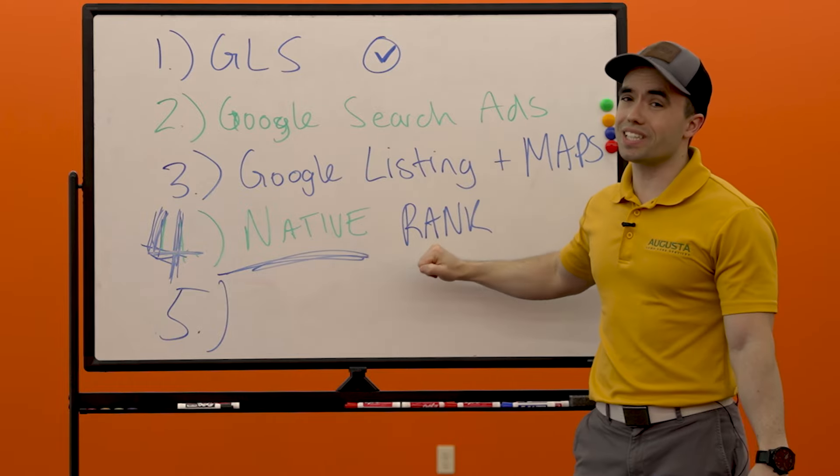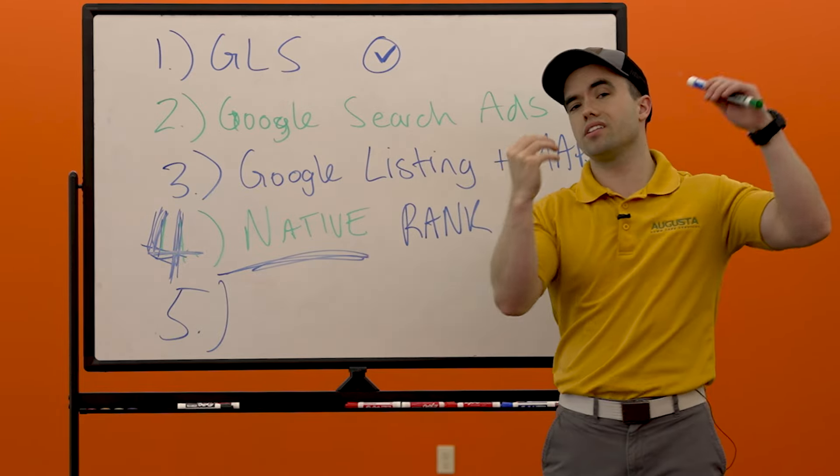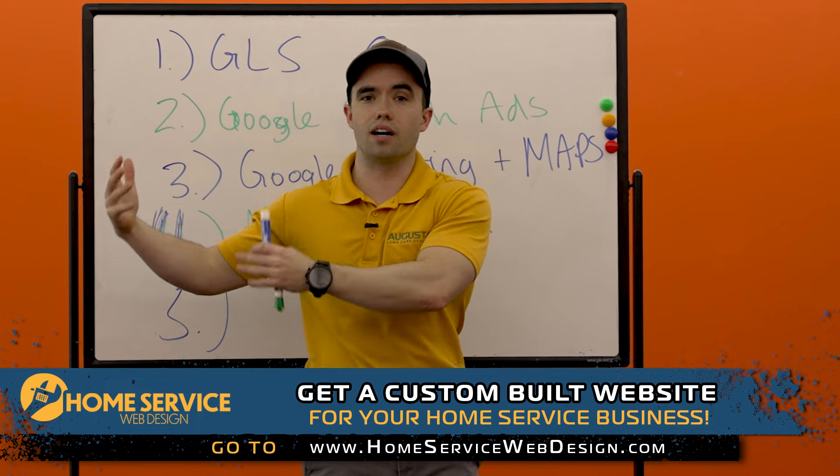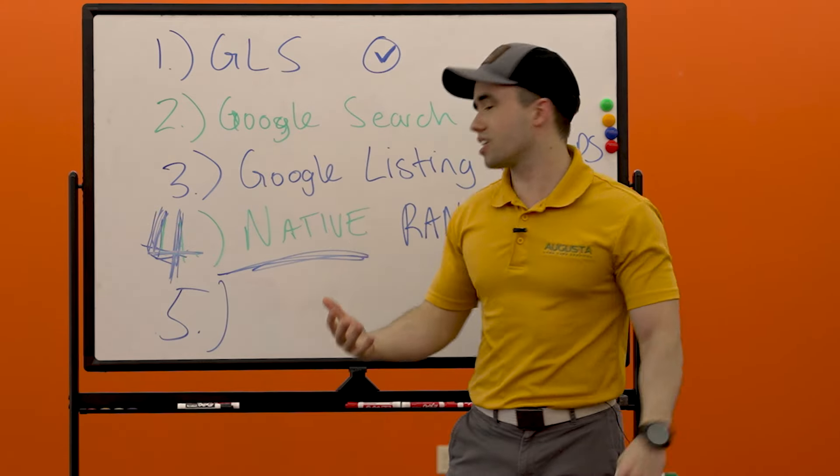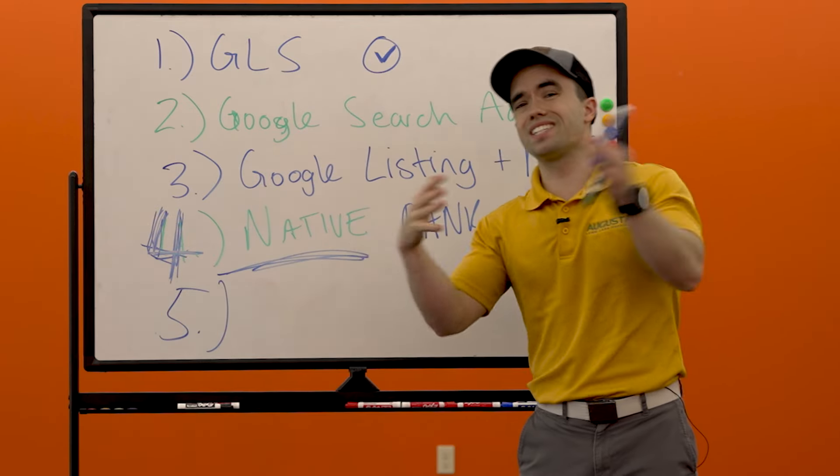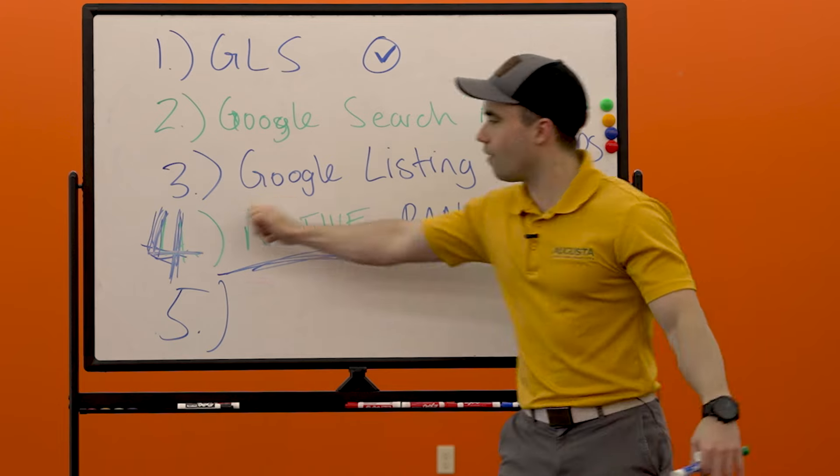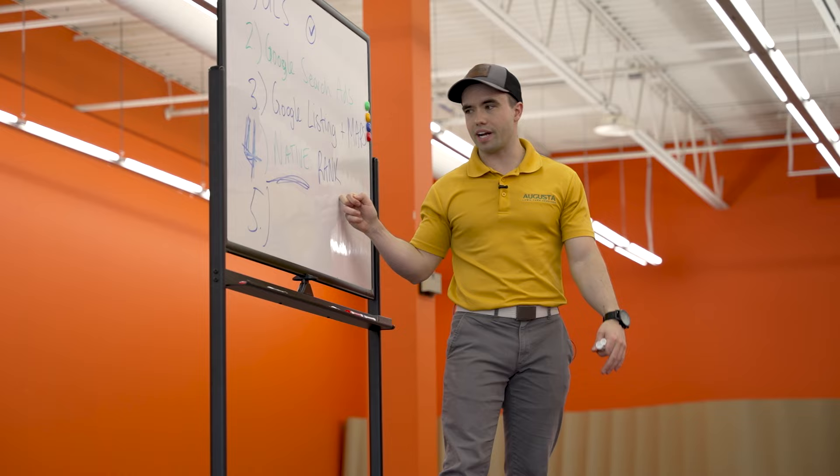So I want to get there. But this could take time. Usually on lawncarewebdesign.com or homeservicewebdesign.com, it can take the average company about two to six months to rank well on number four, which is native rank.